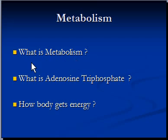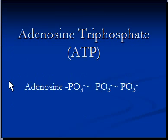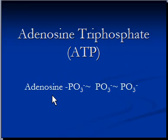Before we try to understand what is metabolism, we have to understand what is adenosine triphosphate. The human body gets its energy in the form of calories. These calories come from a biological molecule known as adenosine triphosphate, and the formula is in front of you. These molecules are also known as the body's energy currency molecules.